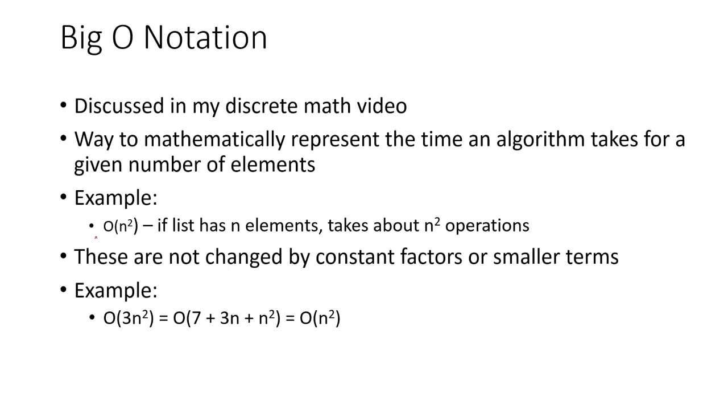For example, Big O of n squared is simply a way to represent a quadratically running algorithm. So if the list has n elements, it takes about n squared operations to sort it or to run the algorithm.